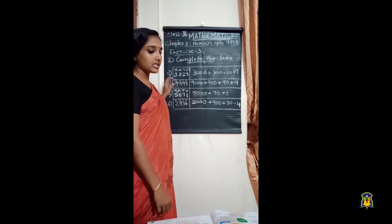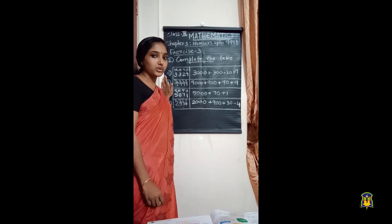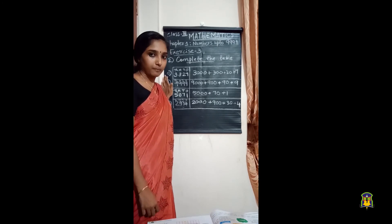So here we completed the table given in the exercise. Parts A and B I haven't done — those you have to do yourself. Today we studied how to write the expanded form and also the short form of a number. In Exercise 3, the second question is to be done as homework. Some questions I have explained here; the rest you have to do as homework. Thank you, children.